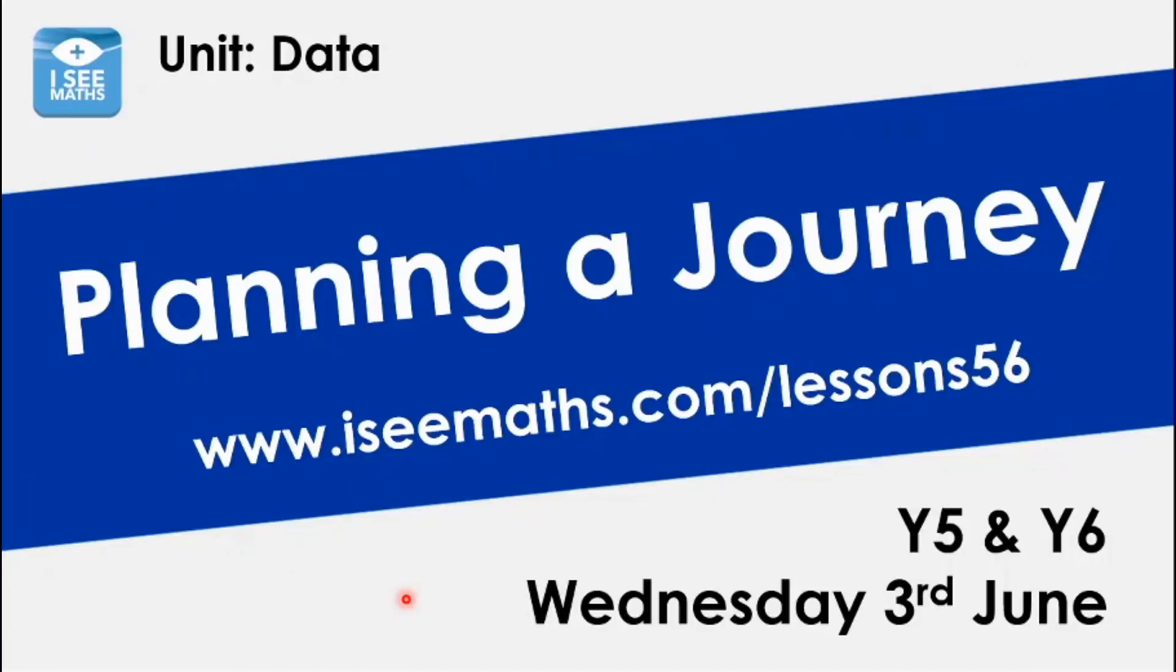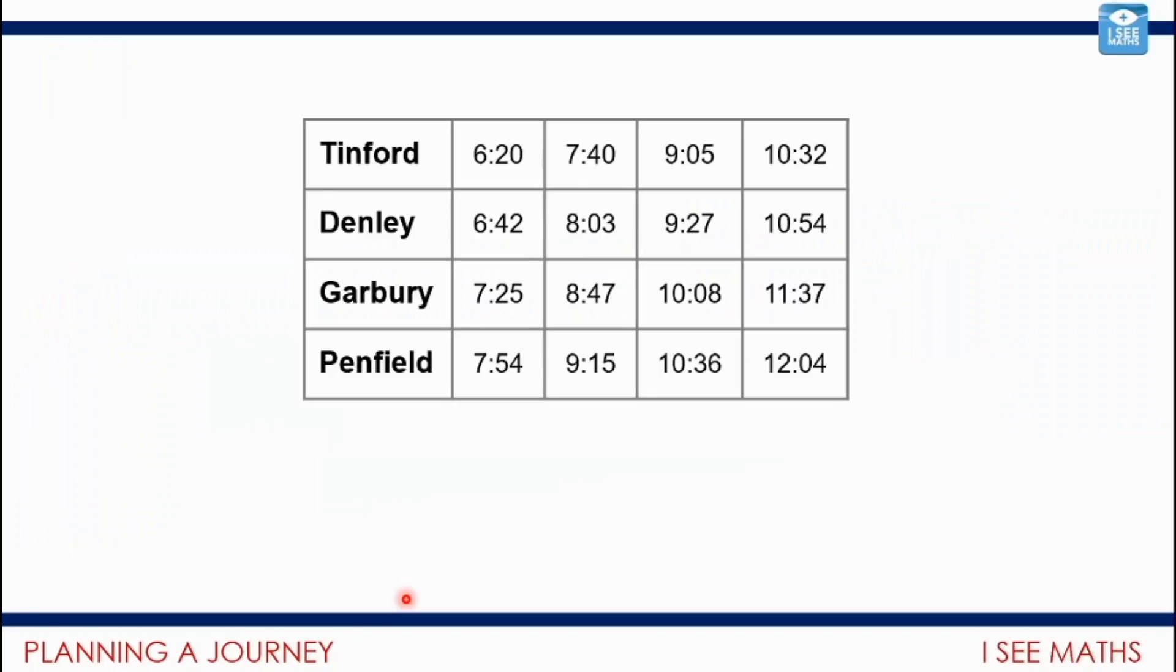Today's all about interpreting train timetables, planning journeys, and thinking how that might be affected by the situation you're in. Let's have a look at this train timetable. This is a train timetable for this journey from Tinford, calling at Denley, Garbury, and finishing at Penfield. We can see trains leave Denley at 6:42, 8:03, 9:27, and 10:54. Let's have a look, this fourth train leaves Tinford at 10:32, gets into Garbury at 11:37.